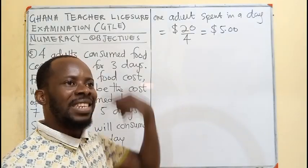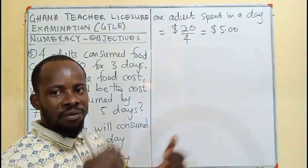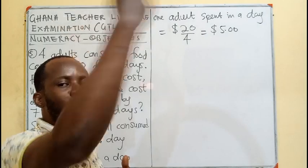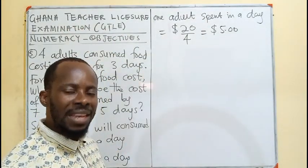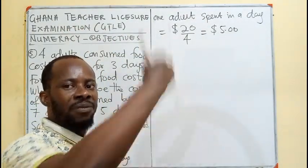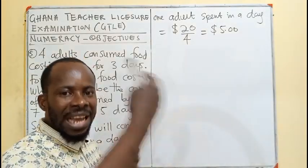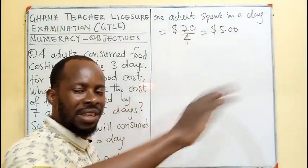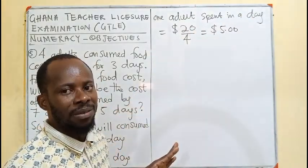The 4 of them together: $5 each making $20 in a day. Day 1: $20, Day 2: $20, Day 3: $20. That totals $60 — confirming our unit cost is correct.